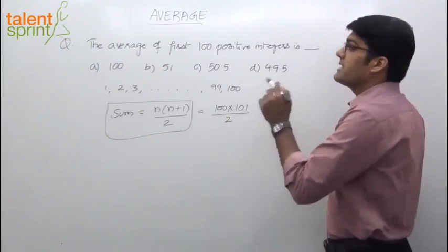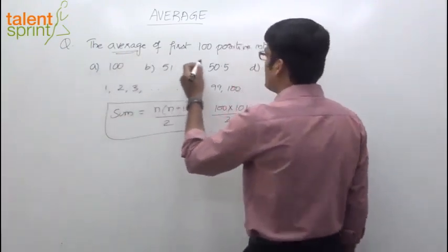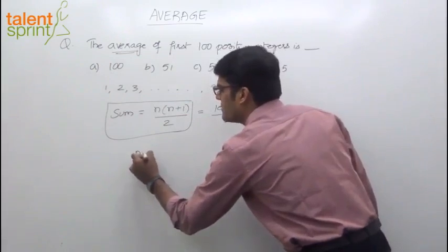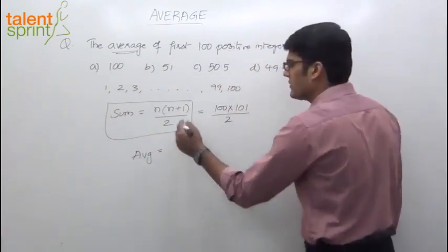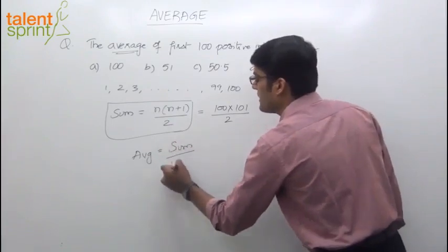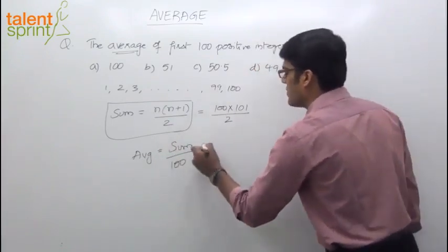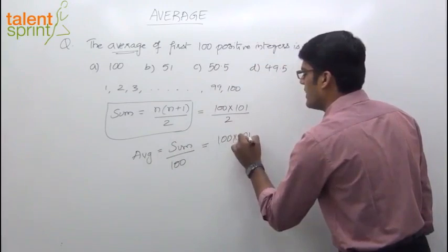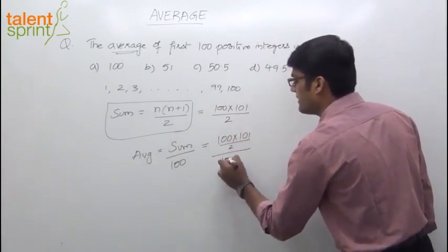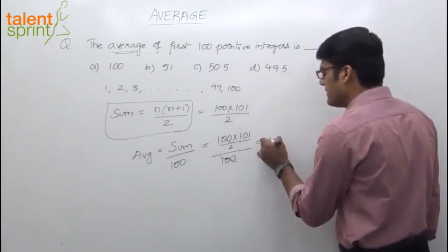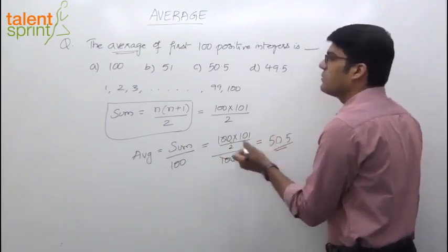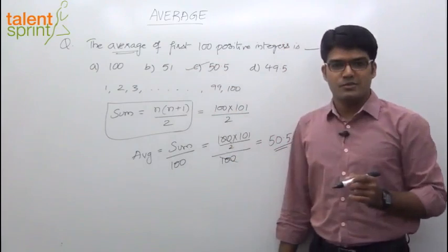Now, the question says average of first 100 positive integers. So average of these values. You know that average is equal to the sum by the number of values. Sum by 100 because we have got 100 values here. So what do we get? 100 into 101 by 2 whole divided by 100. So this 100 and 100 here gets cancelled. We are left with 101 by 2 which is 50.5. So option C has to be the correct answer.